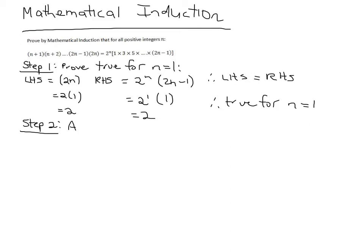So step 2 is assume it's true for n equals k. So that assumption is instead of n, we're going to write k, k plus 1, k plus 2, dot dot dot,